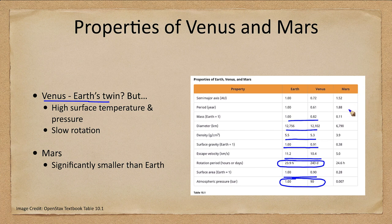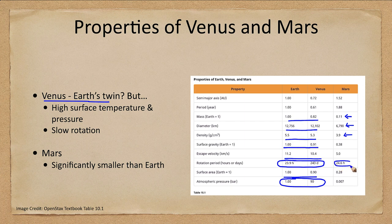Mars, on the other hand, is a lot smaller — about 10% of Earth's mass, about half its diameter, less dense, with lower gravity and escape velocity. However, the rotational period is almost the same as Earth's, which makes it convenient for a rover to recharge solar cells efficiently — something that would not happen on our Moon. Mars has essentially no atmosphere; its atmosphere is very, very thin, not nearly enough to breathe.